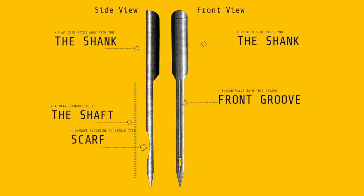You then have the eye where the thread will go through, and the point. It's this point and eye that change according to the type and purpose of the needle, and these two can have a big impact on what you're sewing and how well it sews.